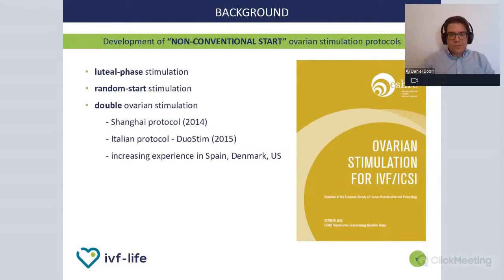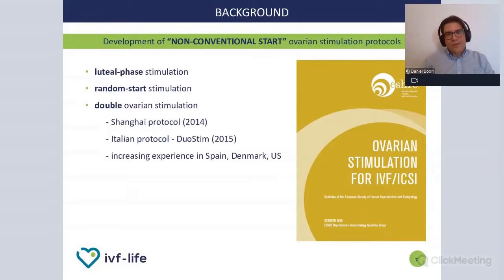The double ovarian stimulation approach was developed, meaning that the conventional follicular phase — the first phase of the menstrual cycle — is used for the first stimulation, and then immediately back-to-back, with a very small pause, a second stimulation is started in the luteal phase. This was the so-called Shanghai Protocol, which was first published in 2014.